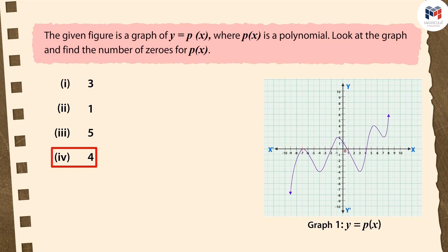If you have chosen the fourth option, it is the correct answer. Well done! This graph intersects the x-axis at a total of four points. So here, the number of zeros of the polynomial p(x) will be four.